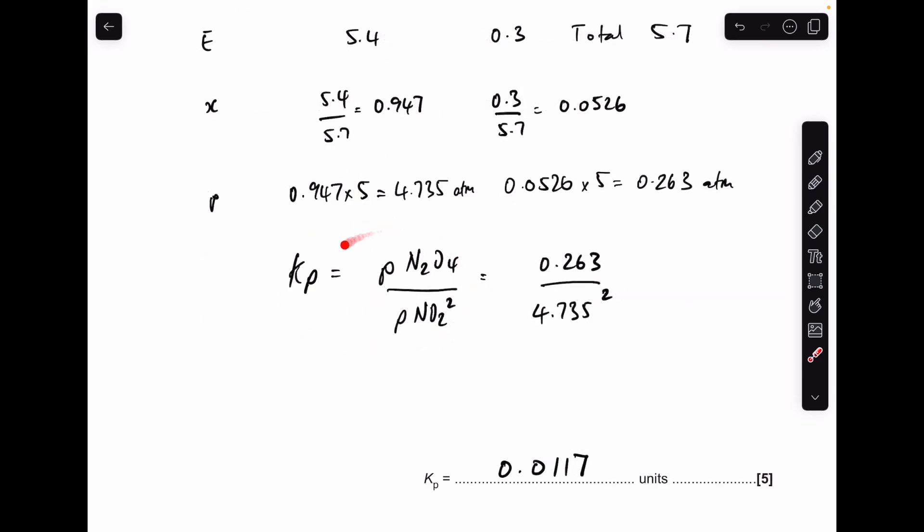So there's the Kp expression. Just be careful with brackets. I don't bother with brackets for Kp because there's no danger then of putting square brackets in by accident, which would be totally wrong. So we've got the partial pressure of N2O4 on the top divided by the partial pressure of NO2 squared on the bottom.